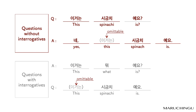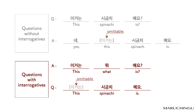네, 시금치예요. The subject 이거는 can be omitted. Questions with interrogatives: 이거는 뭐예요? — 시금치예요. The subject can be omitted here as well.